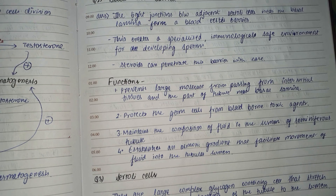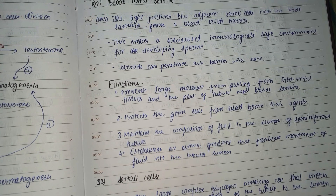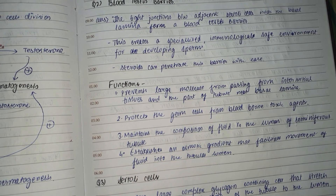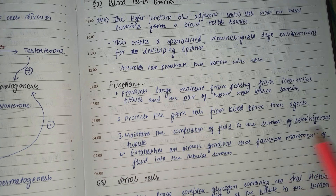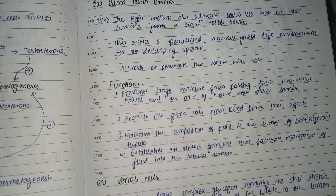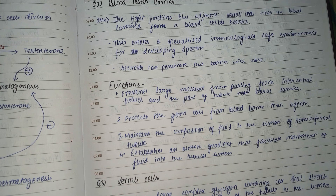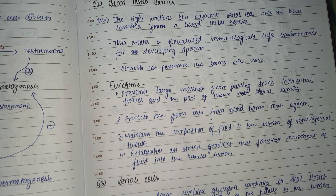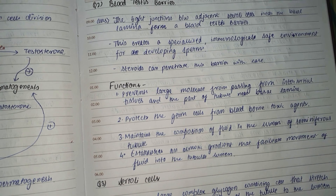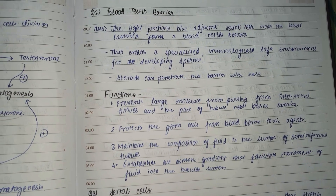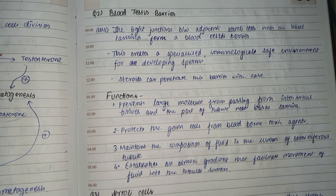The barrier also maintains the composition of the fluid in the lumen of the seminiferous tubule, which is a very important function. It does this with the help of potassium ions, calcium ions, and other osmotically active substances. It also establishes an osmotic gradient that facilitates movement of fluid into the tubular lumen.